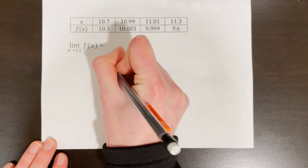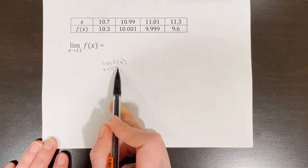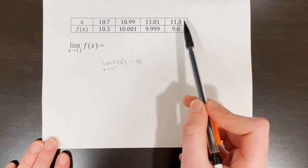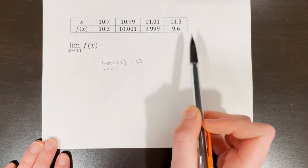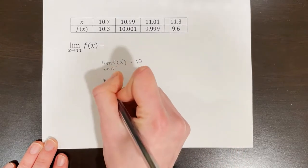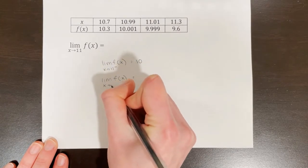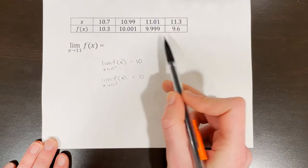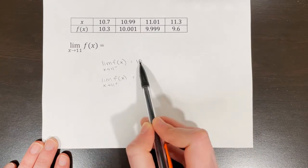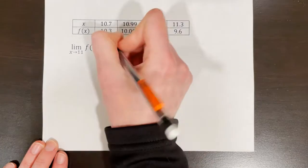From the left side — with the minus sign — that equals 10. Now from the right side, we have 11.3 and 11.01, with f(x) values of 9.6 and 9.999, getting pretty close to 10. So we can reasonably guess that the right side limit is also equal to 10. When the left and right side limits match, the overall limit exists and equals that value. The limit of f(x) as x approaches 11 equals 10.